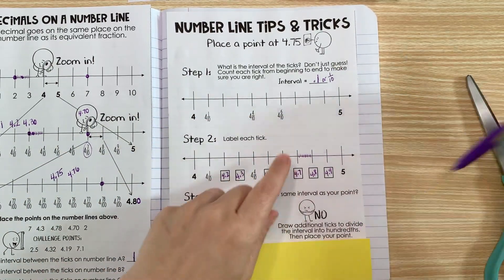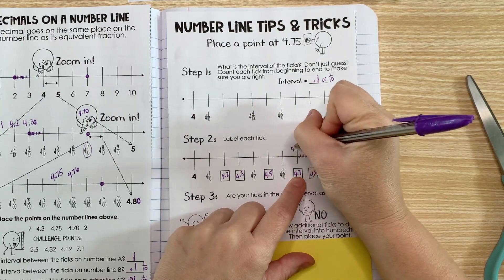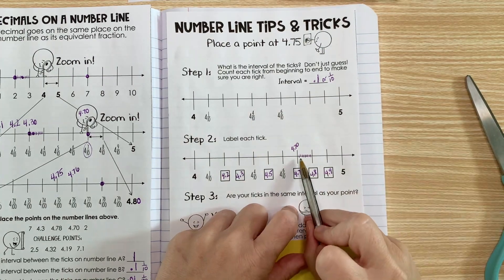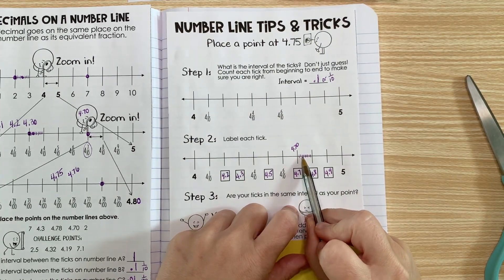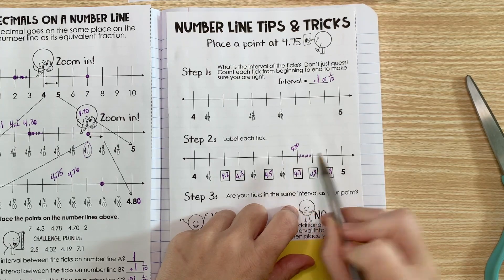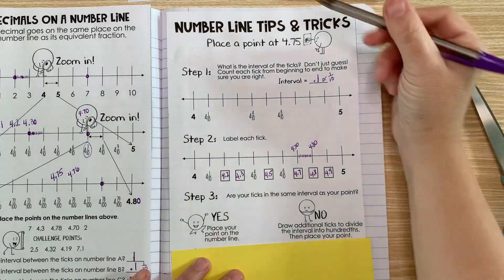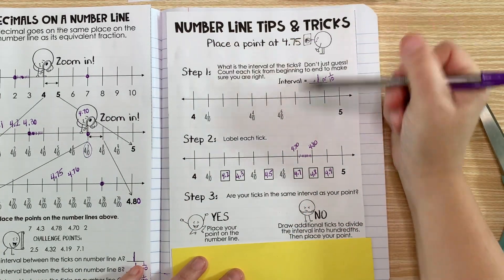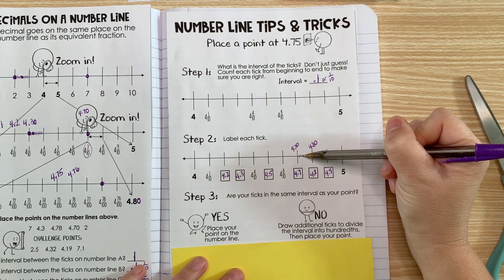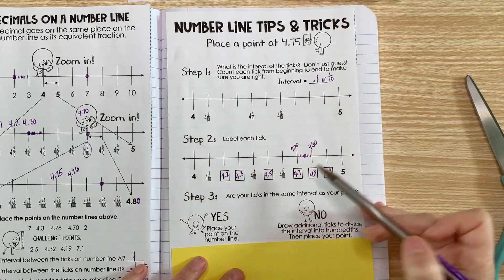A hundredth would just be one of these. So 4.70 would be right here, and this would be 4.71, 4.72, 4.73, all the way to 4.80 which would be right here. So if we have to put 4.75, we just have to go halfway: 71, 72, 73, 74, 75. So our point would go right there - 4.75.